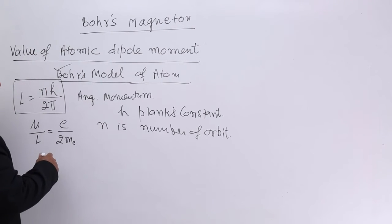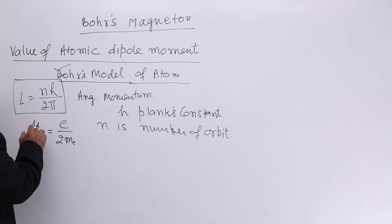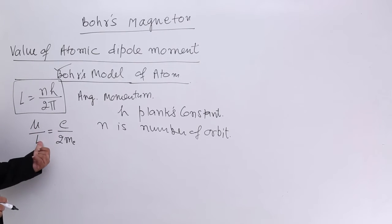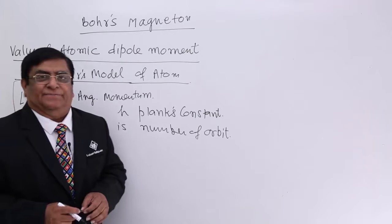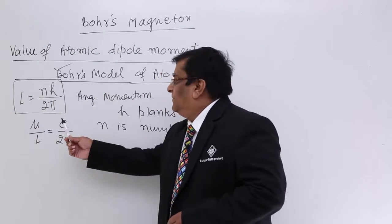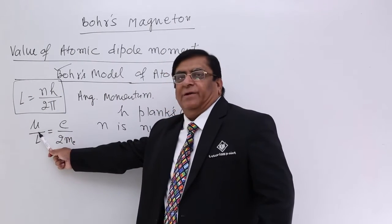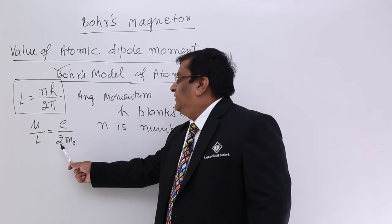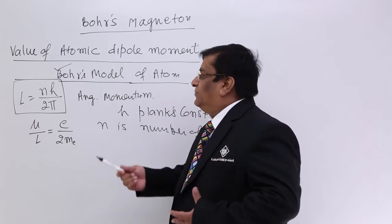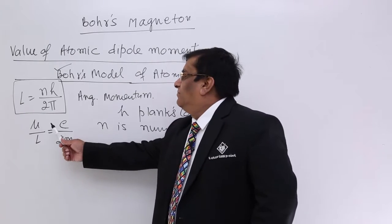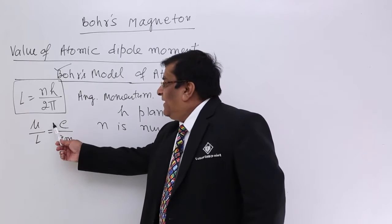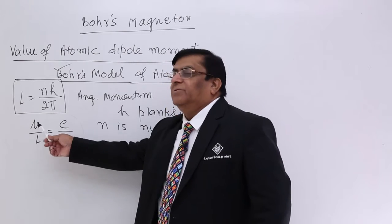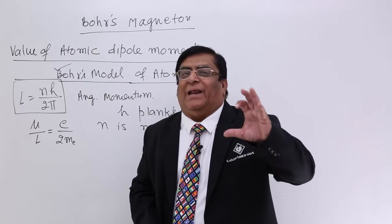We use the equation μ upon L equals e upon 2mₑ. This is the ratio we derived in the previous lecture — the ratio of magnetic dipole moment to angular momentum, called the gyromagnetic ratio, equal to e upon 2mₑ. This helps us find the magnetic dipole moment: once we know the angular momentum, we can find the magnetic dipole moment of a simple atom.